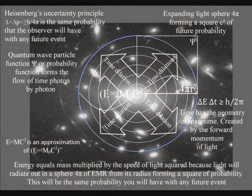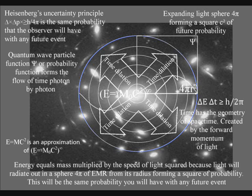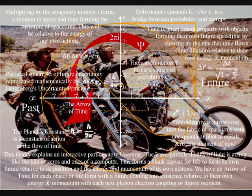The C² in the equation represents light radiating out in all directions at a constant speed, forming a sphere of electromagnetic radiation from its radius, forming a square of probability. This is the same probability we have with any future event because the process forms the flow of time itself, photon by photon.